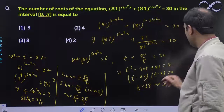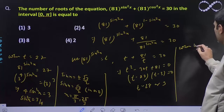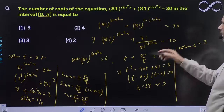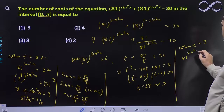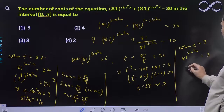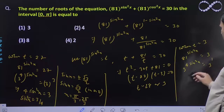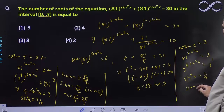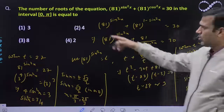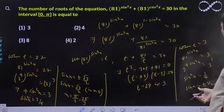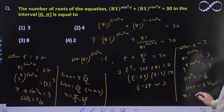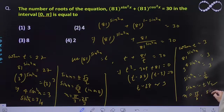When t equal to 3, यह value भी चेक करेंगे. 81 to the power sin²x equal to 3, so 3 to the power 4 sin²x equal to 3 to the power 1. So sin²x equal to 1 by 4, sin x equal to plus minus half. लेकिन 0 to pi में sin का value positive ही होगा. तो x का value मिलेगा — 0 to pi में pi by 6 and 5 pi by 6. तो 2 value यहाँ पे और 2 value यहाँ पे.